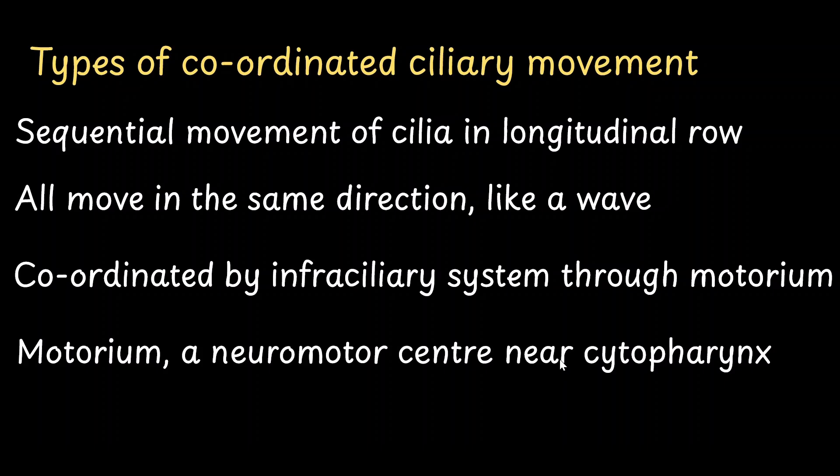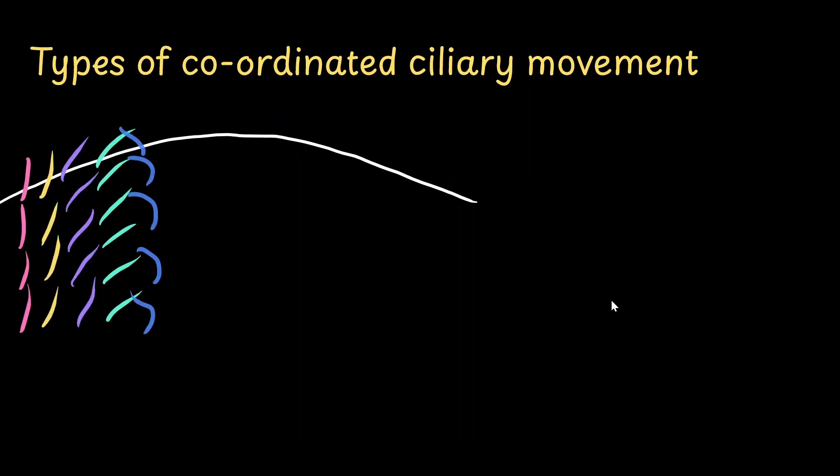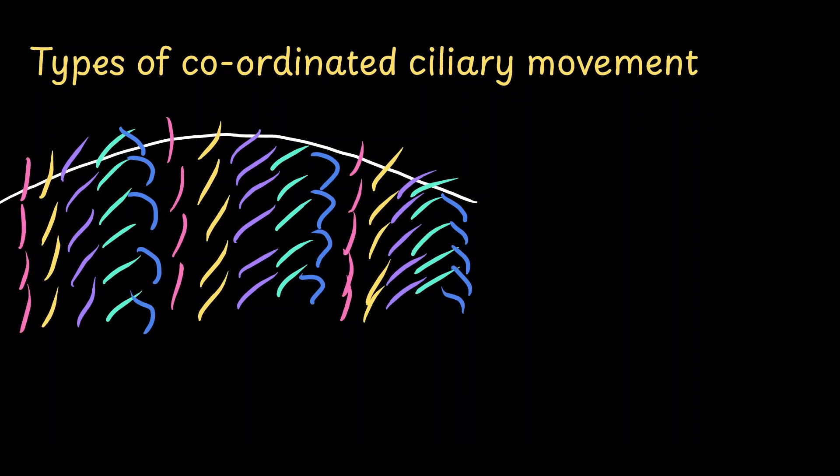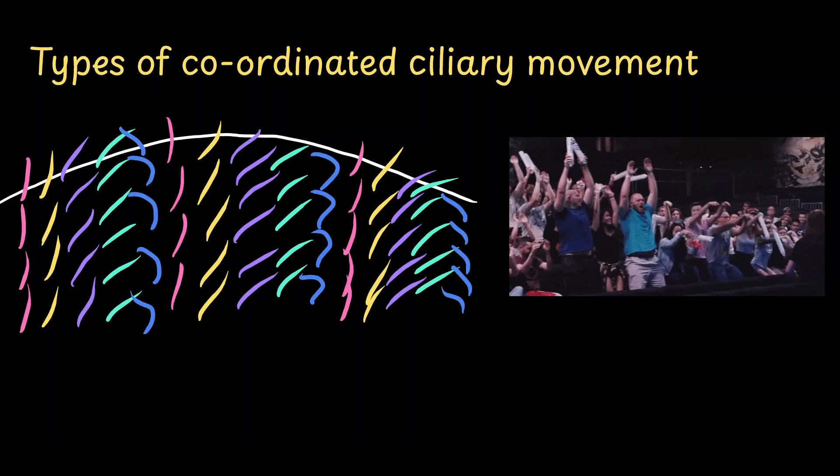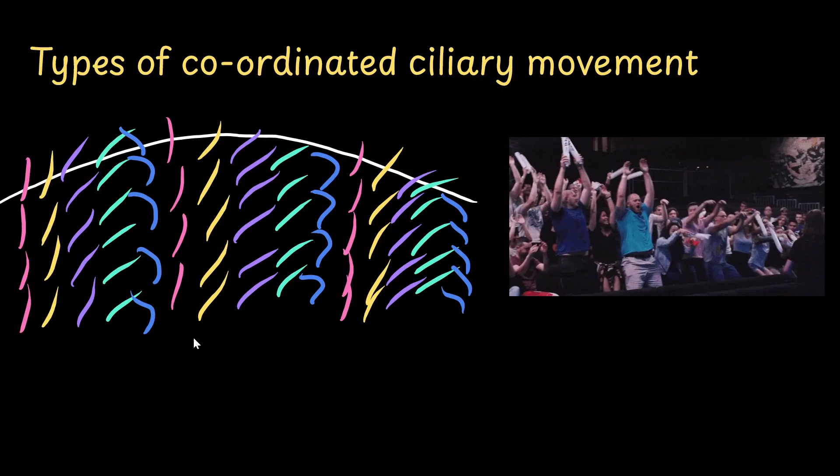The motorium controls the infraciliary system and in turn controls how the cilia move in coordination. So I have tried my best to represent how this movement is going to look like. This is the cell surface. So here you are going to see rows of longitudinally arranged cilia. And when they start beating, you notice that no two adjacent cilia are in the same position. All of them are in different positions. The reason for this is because after one row starts beating and after a certain gap, the second row starts. Does this movement remind you of something else? I think it is similar to this movement that we see in a football stadium or in any sports stadium. This is called a wave. And this sort of coordinated movement is called a metachronal movement.